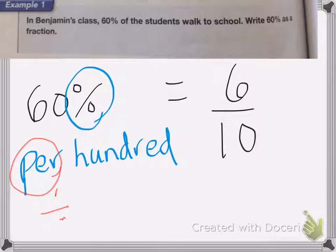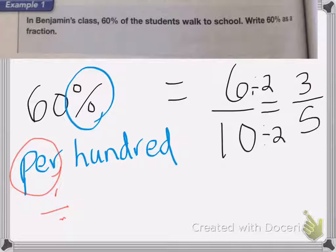Now I have 6 tenths, and 6 tenths I can divide top and bottom by 2. 6 divided by 2 is 3, 10 divided by 2 is 5, so my answer is three-fifths.